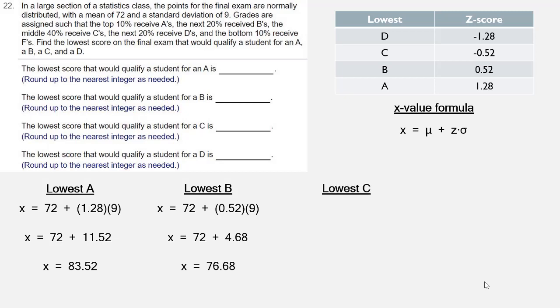For the lowest C, we insert the Z-score of negative 0.52. We multiply and add, and our X-value is 67.32.